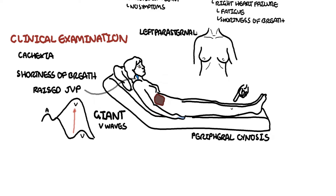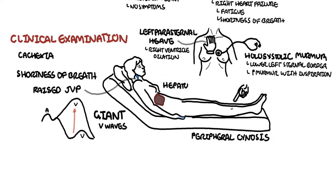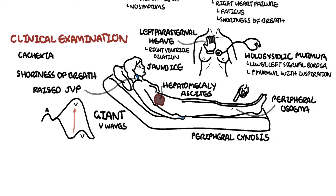Precordial examination reveals a right ventricular heave due to a dilated right ventricle, and a holosystolic murmur at the lower left sternal border. This murmur is louder with increased venous return — for example, during inspiration or when the leg is raised. Other findings include hepatomegaly from congestion, ascites, peripheral edema, and occasionally jaundice reflecting hepatic dysfunction. A pulsatile liver can occur in severe tricuspid regurgitation.